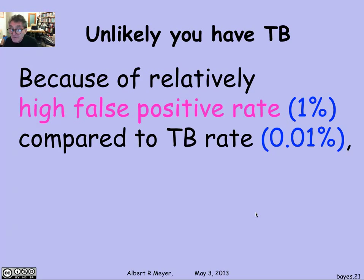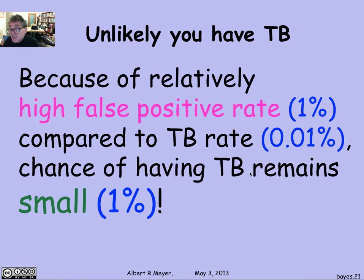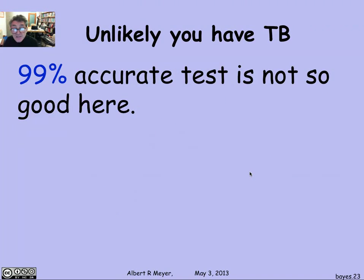Because of the relatively high false positive rate of 1%, that false positive rate washed out the actual number of TB cases, where the TB rate was only 0.01%. So almost all of the positive reports were caused by the false positive rate, meaning that when you have a positive result, you still only have a 1% chance that you actually have TB. The 99% accurate test was not very useful for figuring out what action or treatment to take — with only a 1-in-100 chance, the odds are you won't do anything.